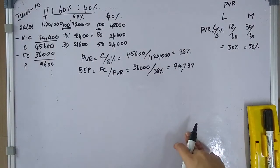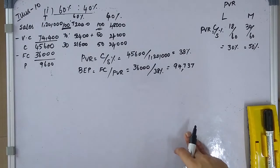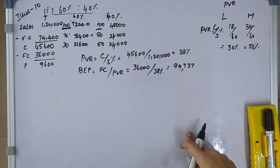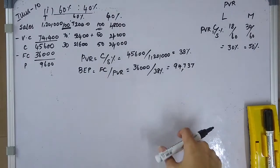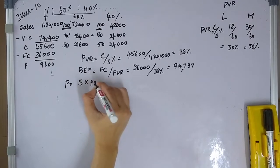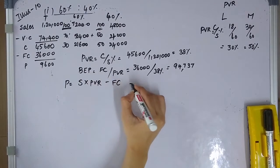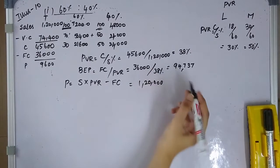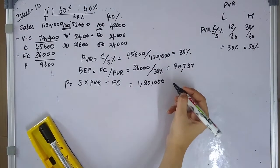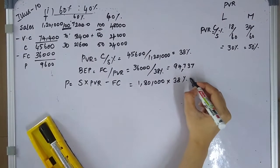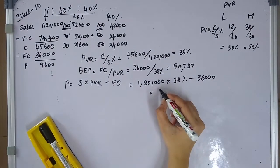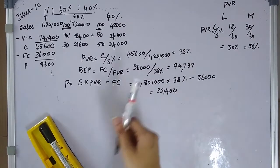Last part of the question: calculate the profit estimated on sales up to 1,80,000 rupees per month for each sales mix provided above. If sales is 1,80,000, profit equals sales into PVR minus fixed cost: 1,80,000 into 38% minus 36,000 gives profit of 32,400.